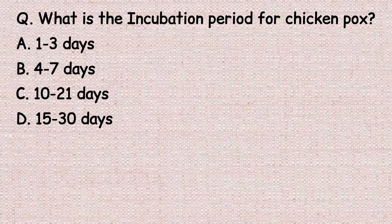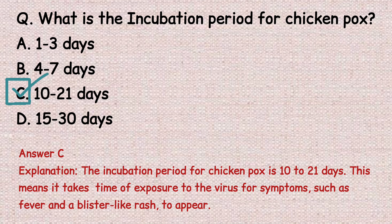The next question: what is the incubation period for chickenpox? Option A: 1 to 3 days. Option B: 4 to 7 days. Option C: 10 to 21 days. Option D: 15 to 30 days. The correct answer is option C, 10 to 21 days. This is the time from exposure to the virus for symptoms such as fever and a blister-like rash to appear.